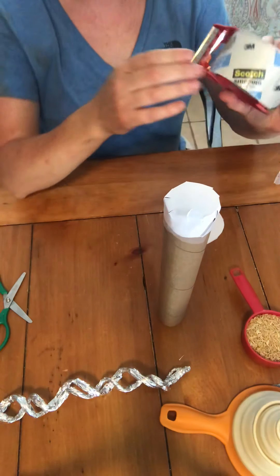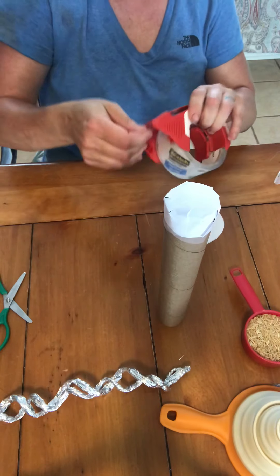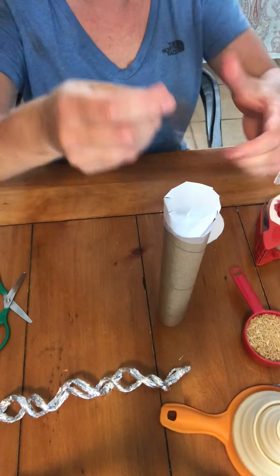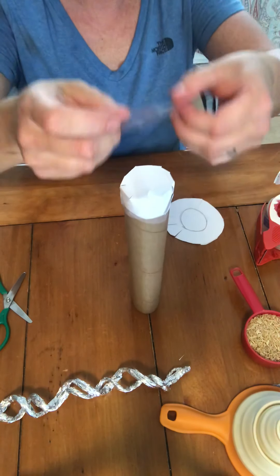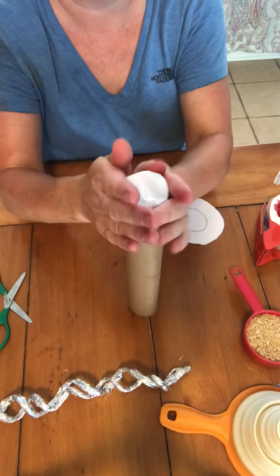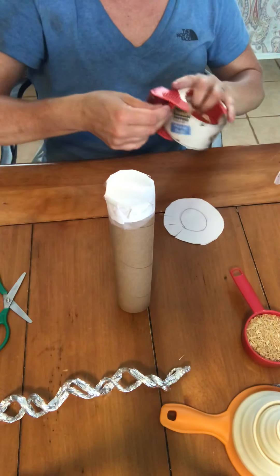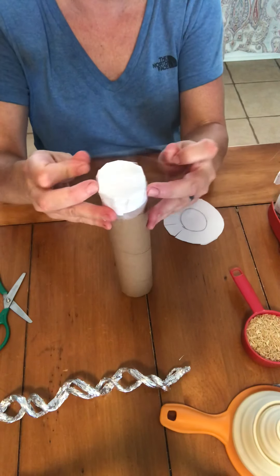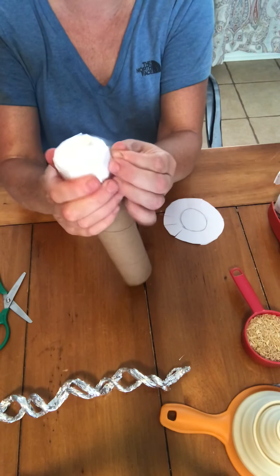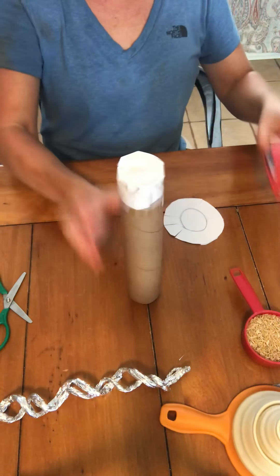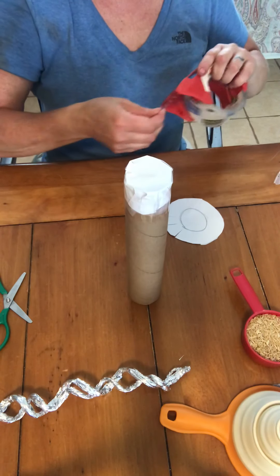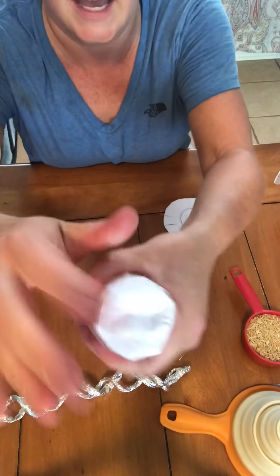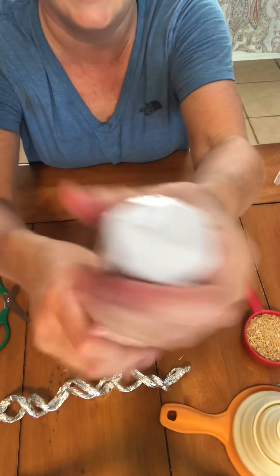Alright, then you want to take your bigger tape and you're going to take a piece and you're going to put it over the top like so. And then you're going to take it and wrap it all the way around so that this stays down really good. Tape it, tape it, tape it. Alright, so we have taped over the end and we have taped over the sides, there we go.